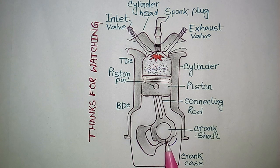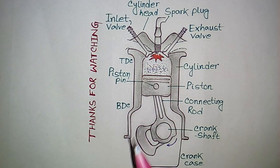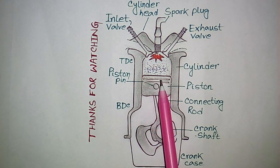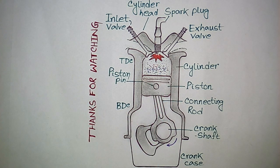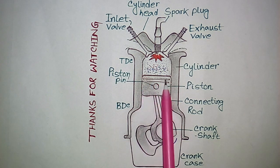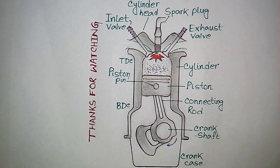The crankshaft and connecting rod are covered by the crankcase. This is the crankcase, by which the crankshaft, connecting rod, etc. are covered. Next is the piston ring — these two are piston rings. They fit on the outer surface of the piston to provide a tight fit and reduce friction between piston and cylinder.